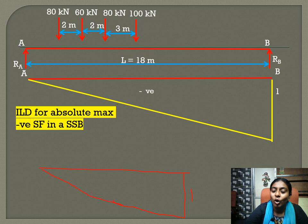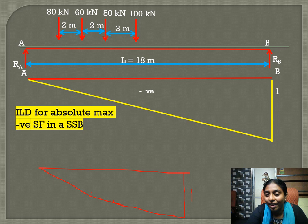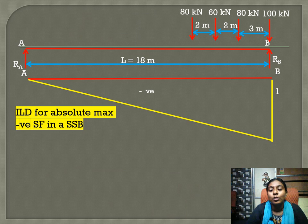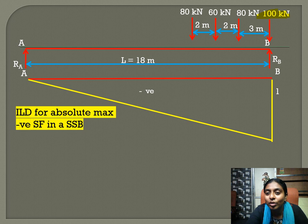The ordinate for negative shear force at the section is x/L. When the section is taken at B, x = L, so x/L = L/L = 1. That is why the maximum ordinate at B equals 1. We get the maximum absolute negative shear force when we place the leading 100 kN load at B.